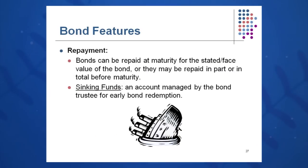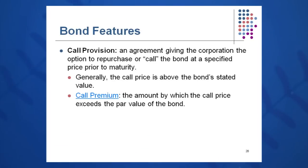Bonds can be repaid at maturity for the face value, and may be repaid in part or in total before maturity if they're callable. To this end, the CFO might set up a sinking fund — essentially a savings account managed by a trustee to redeem the bond early — to manage the debt-to-equity ratio. If the company has a particularly good cash year, they may elect to call in some bonds if the bond has a call provision, as indicated in the bond indenture.